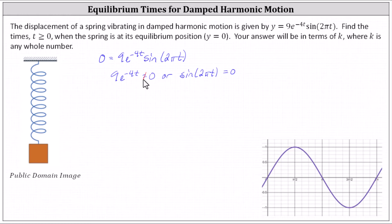Now we need to solve sine of 2πt equals zero. While we could take the inverse sine of both sides of the equation, this will only give us one solution, and we're looking for all values of t expressed in terms of k, where k is any whole number. So let's solve this based upon our knowledge of the sine function and the input angles.